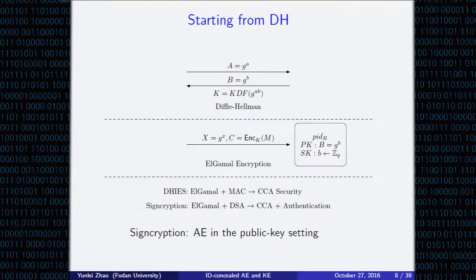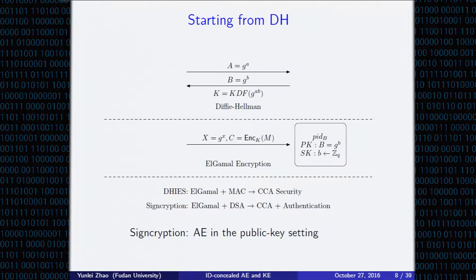I would like to review some basic schemes starting from Diffie-Hellman. Since the invention of Diffie-Hellman, shortly after came ElGamal encryption, which is CPA secure. The composition of ElGamal encryption and MAC gives us DHIES, which achieves CCA security. Composing ElGamal and DSA gives us signcryption, which achieves both CCA security and entity authentication. Signcryption is authenticated encryption in the public-key setting.